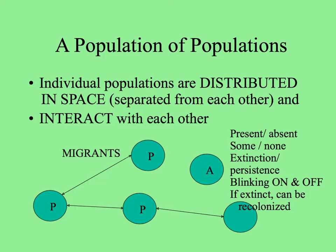Levins proposed that a metapopulation is a population of populations, with subpopulations distributed in space, separated from and interacting with each other. In this picture, they're shown as uniform size, and P and A means presence or absence of the species in question. A patch that's occupied would have individuals present — we could say that patch has blinked on. If they're absent, the species has blinked off in that habitat patch.